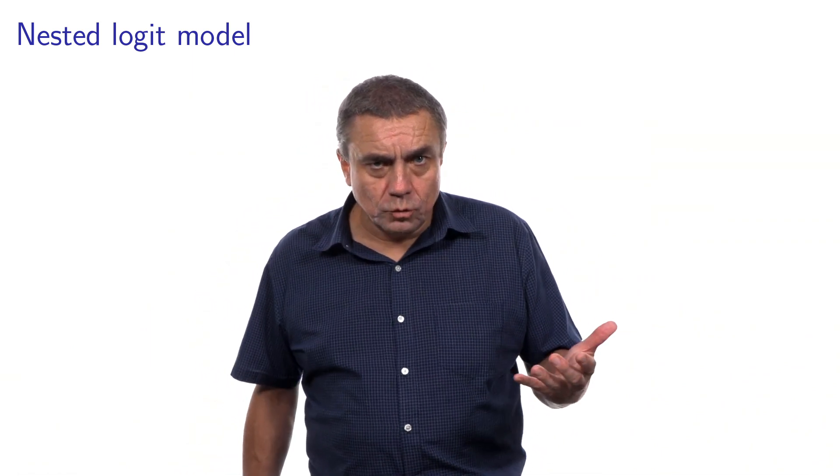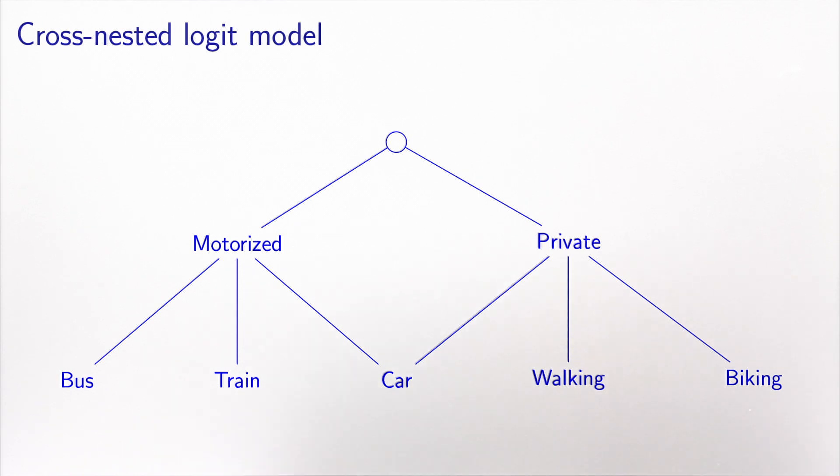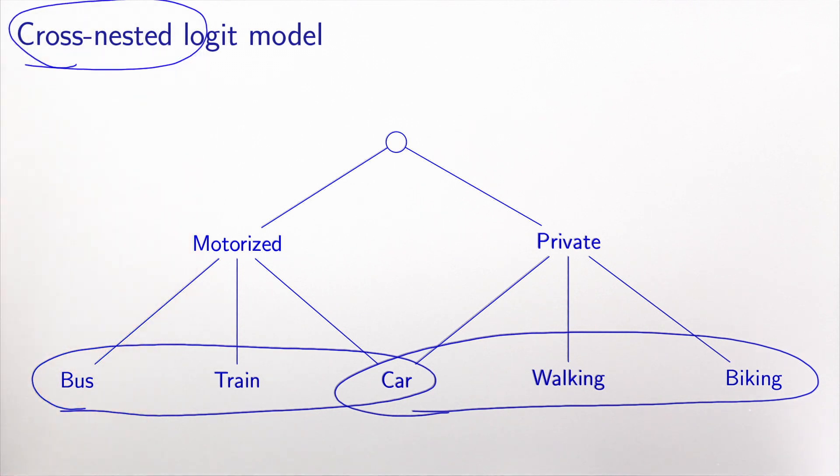Although this is what we would like to do, actually. Somehow, what we would like to do is to say that these three alternatives here are correlated because they are all motorized, and these three alternatives here are also correlated because they represent a private mode of transportation. And typically, this structure cannot be modeled by a nested logit model. Such a structure will be called a cross-nested logit model.